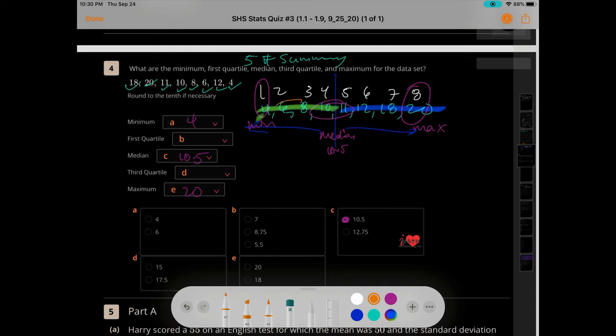So again, the median of four numbers, it's between the second and third one. 6 plus 8 divided by 2 is 14 divided by 2, gives me 7 for the first quartile. So Q1 is 7.